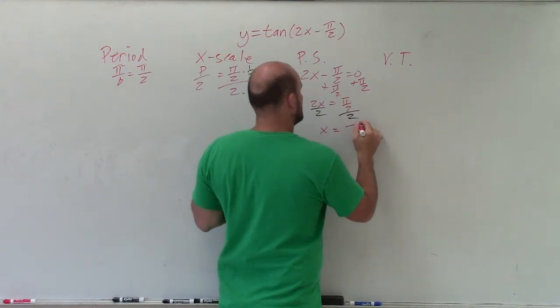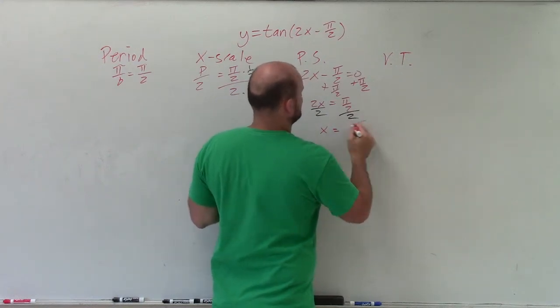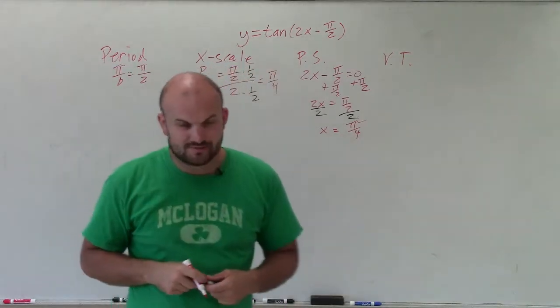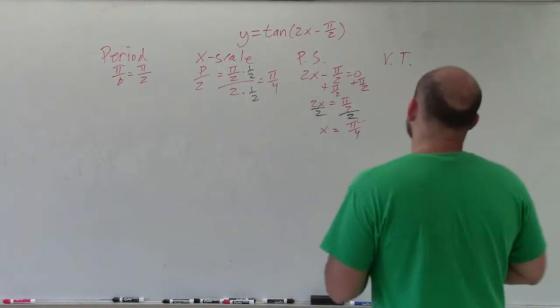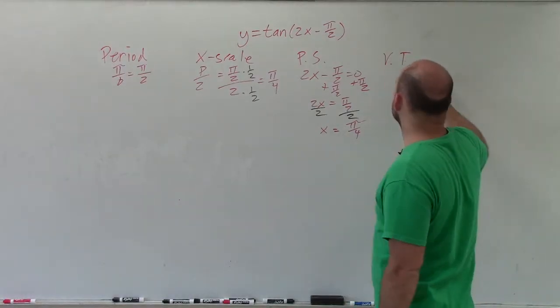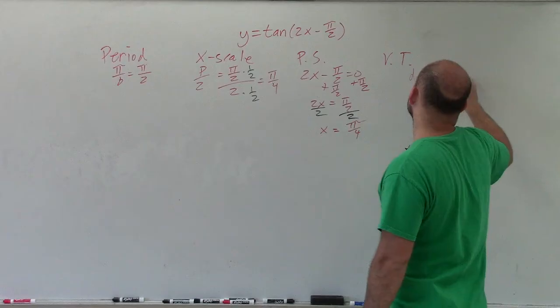x equals, I'm sorry, what am I doing? x equals pi over 4. And our vertical transformation is going to be if the graph is shifting up or down, which is our d, which in this case, you can see I'm not adding or subtracting anything outside the function or equation. So therefore, it is none.